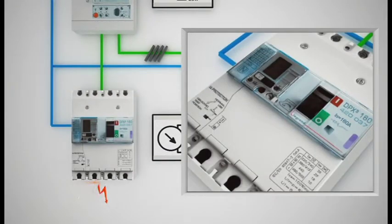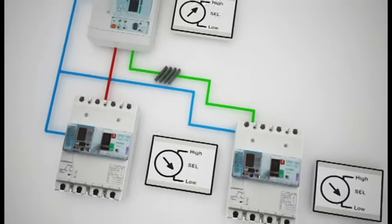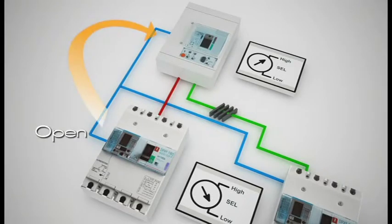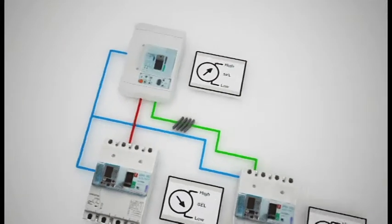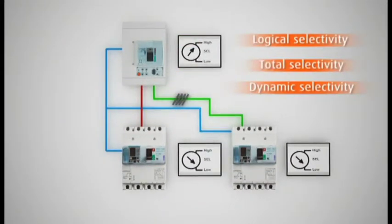The new range of DPX Cubed MCCBs can be adjusted and interconnected to obtain dynamic and logical selectivity between breakers. This functionality, already available on the other sizes of the DPX range, ensures total selectivity regardless of the conditions of the installation.